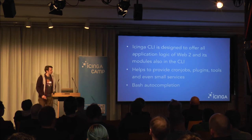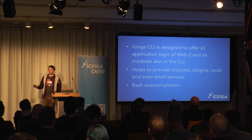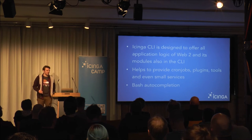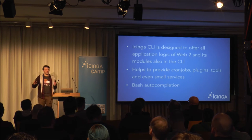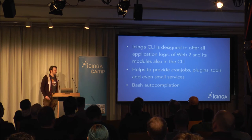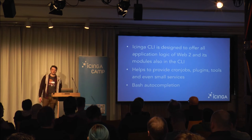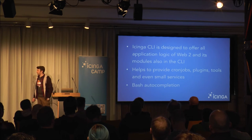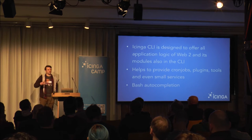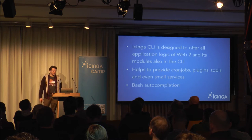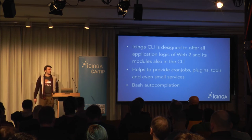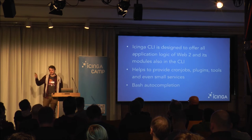So we start our showcase module with some CLI commands. The Icinga CLI is designed to offer all application logic of Icinga Web 2 and all its modules in the CLI environment as well. A good example is the monitoring module — you can list status information in the web but also in the CLI. The Icinga CLI helps you provide cron jobs, plugins, and even small services. We have the business process module where a check plugin is written using the Icinga CLI. Bash auto-completion is already configured if you use packages.